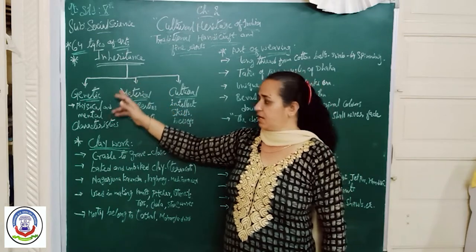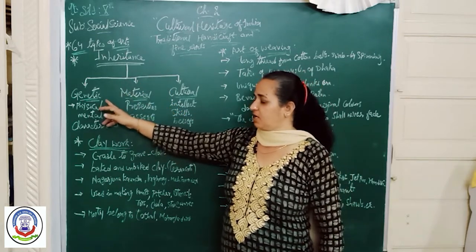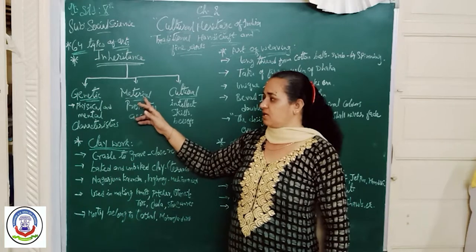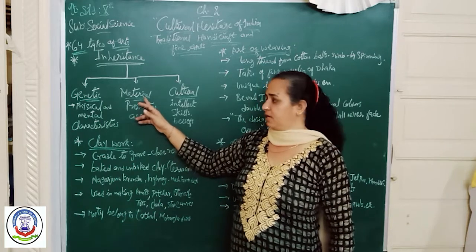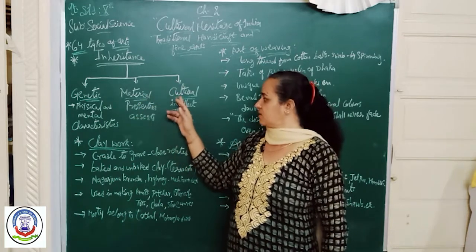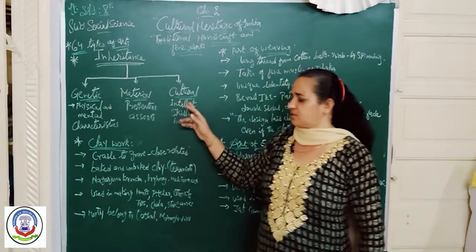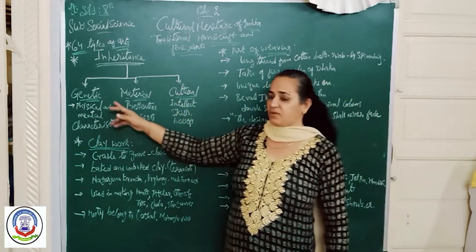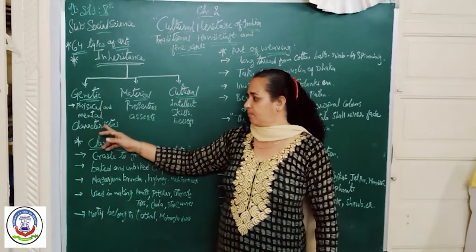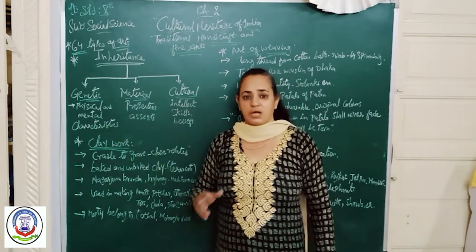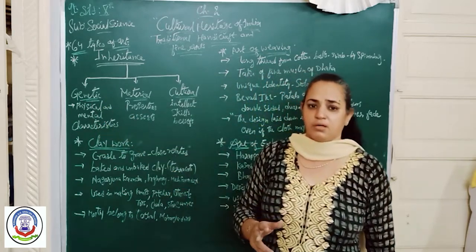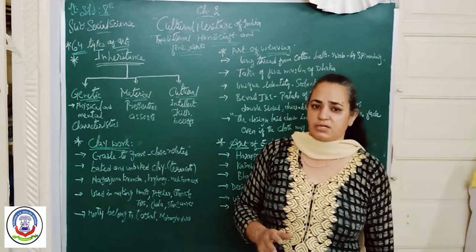The three types of inheritance are: first, genetic inheritance; second, material inheritance; and third, cultural inheritance. Genetic inheritance means the physical and mental characteristics which a child gets by birth from his parents.